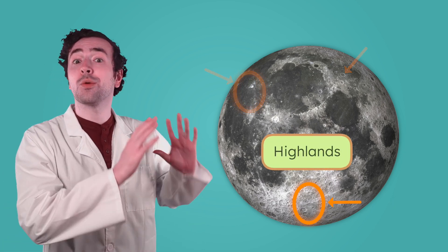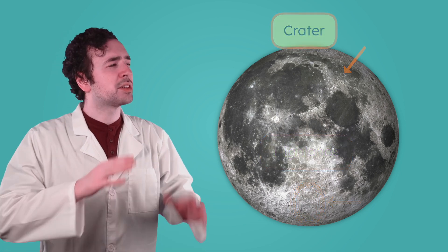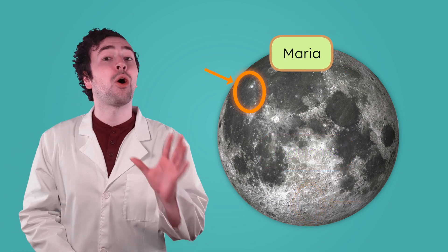This bright, rocky area is the highlands. The round dents are craters, and the dark, flat areas are the maria.